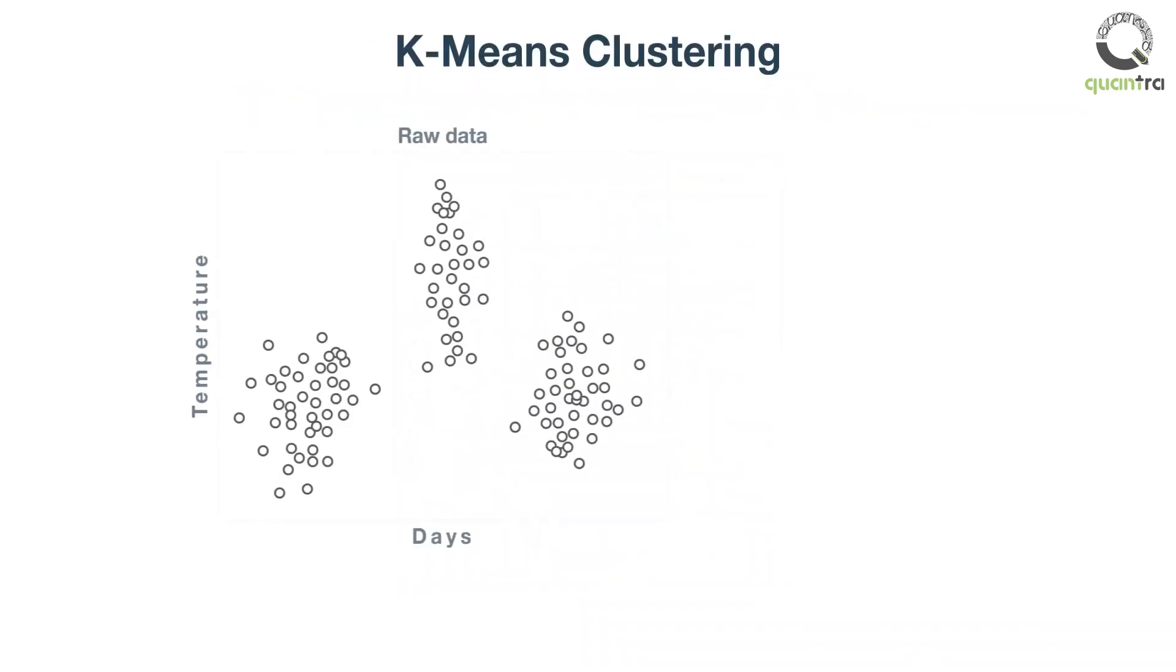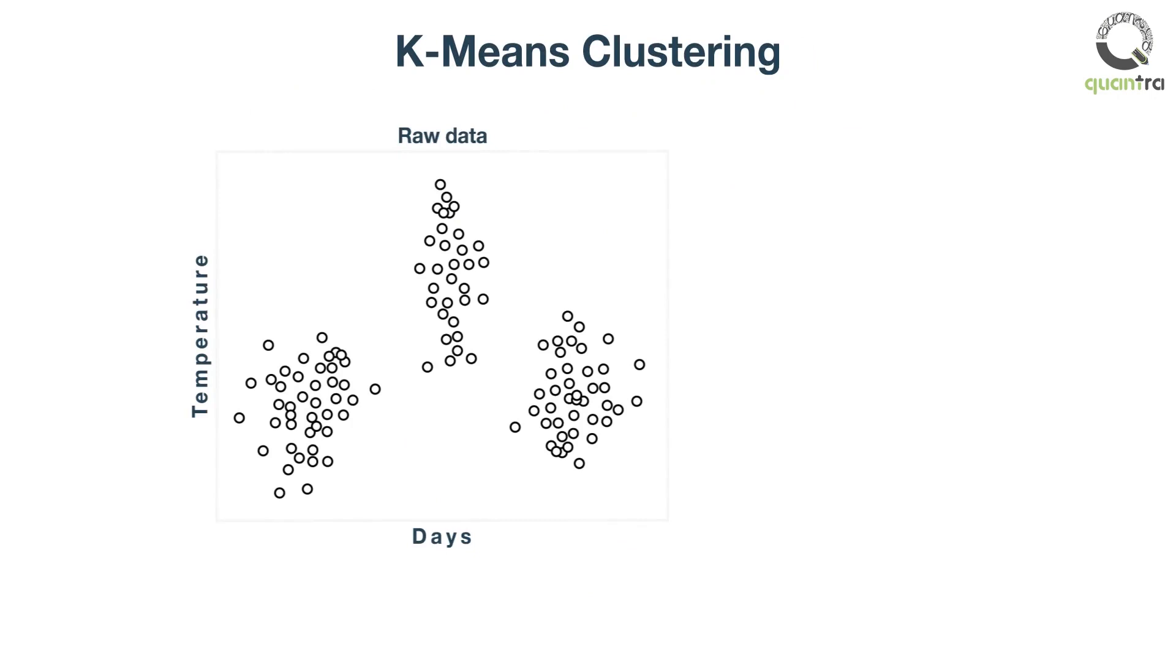Assume that we have a data set that can be divided into three clusters, as shown here. We can arrive at the number of clusters either mathematically or by observation. For the sake of simplicity, let us assume that we can observe three clusters.